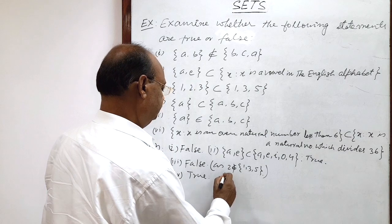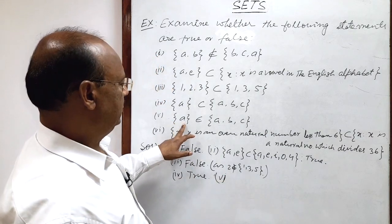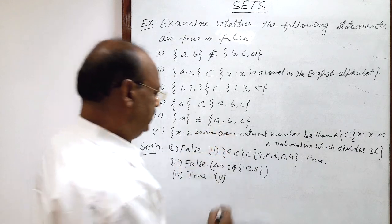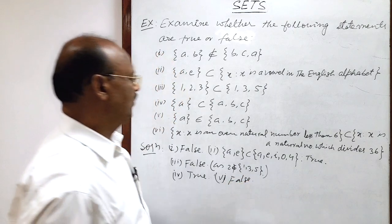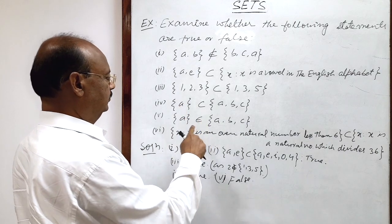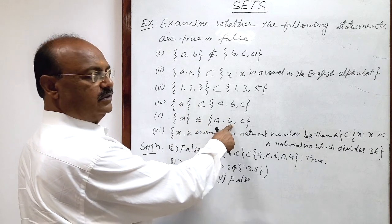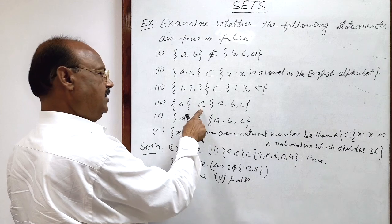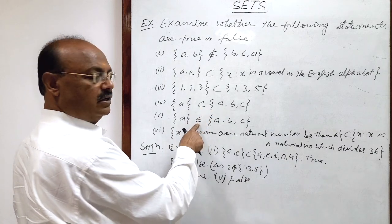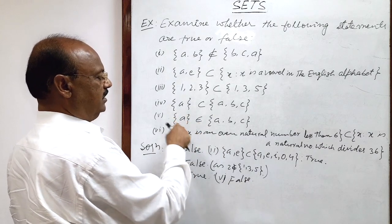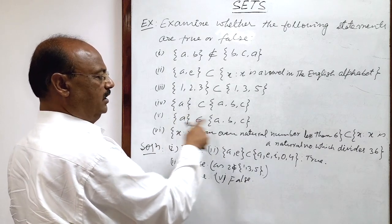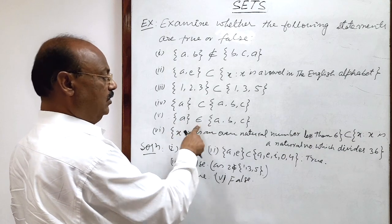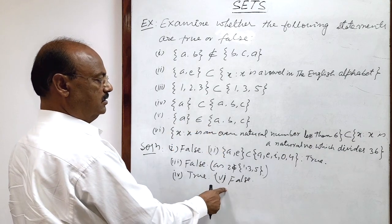Now fifth: whether set {A} is belonging to this set or not. No, this is false. Let us make it clear. The element A is belonging to this set, but this entire set {A} is not belonging to this set. The subset notation is okay, but here the notation used is membership — belonging to. So this entire set {A} is not belonging; only the element is belonging. The statement is false.